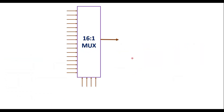Now let me draw the block diagram of the 16-to-1 MUX. This is the block diagram — it has 16 inputs, 4 select lines, and 1 output. The inputs are d0, d1, d2, d3, d4, d5, d6, d7, d8, d9, d10, d11, d12, d13, d14, d15, and the select lines are b, c, d, e.